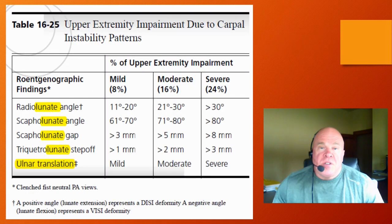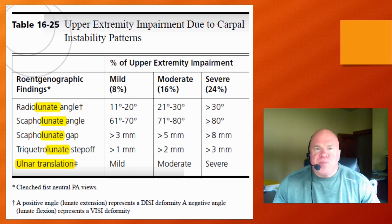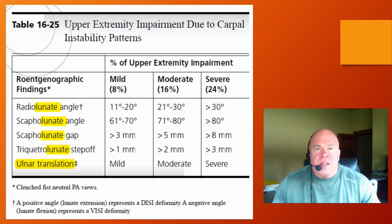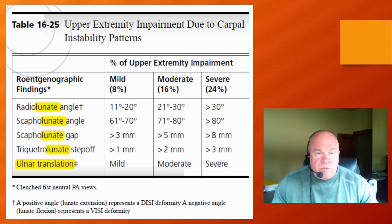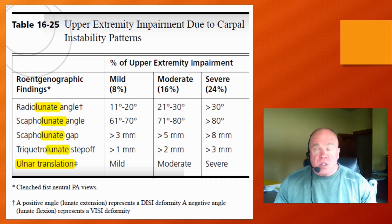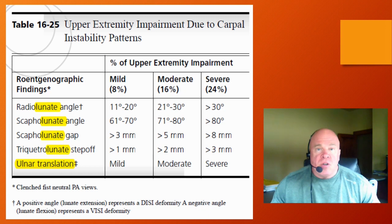Here we have Table 16-25 from the AMA Guides, entitled Upper Extremity Impairment Due to Carpal Instability Patterns. The AMA Guides describe two types of patterns — the dissociative and the non-dissociative instability pattern — and in this table the AMA Guides provide permanent impairment ratings for some of the different types of dissociative instability patterns and also for the non-dissociative instability patterns.